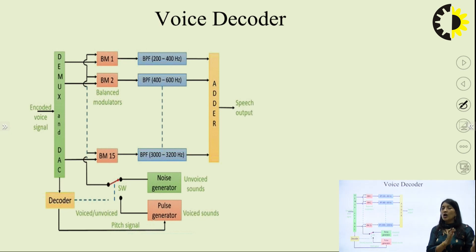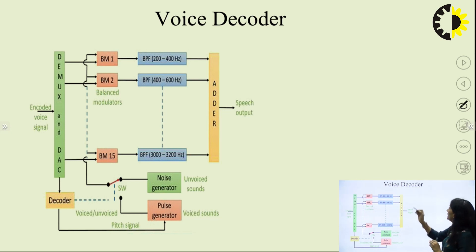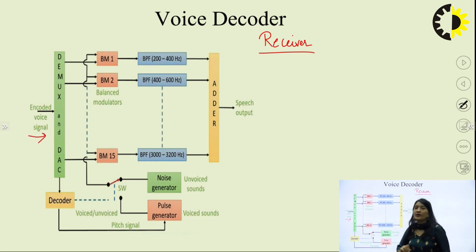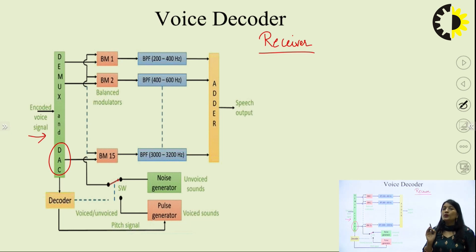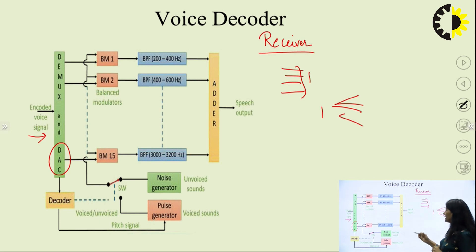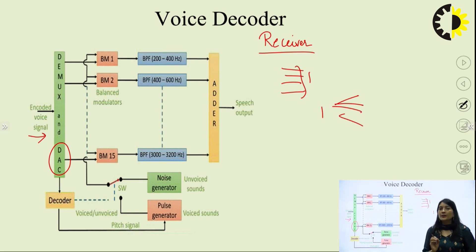The output of the vocoder encoder is transmitted from the transmitting end. At the receiver, we use the decoder. The encoded voice signal is received here. We have a demultiplexer and DAC converter. First, we do demultiplexing — at the transmitter we did multiplexing, so at the receiver we do demultiplexing. Multiplexing means many to one; demultiplexing means one to many. Demultiplexing breaks the signal again into separated ones.